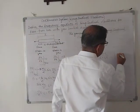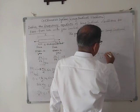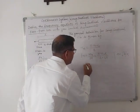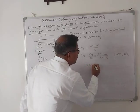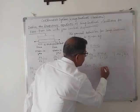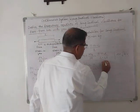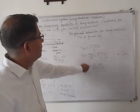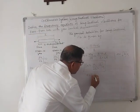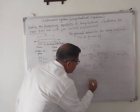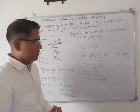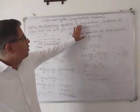Substituting the wave propagation velocity c = √(E/ρ), the natural frequency is: fn = n/(2L) · √(E/ρ). This is the natural frequency for longitudinal vibration, where n = 1, 2, 3, ... and n is the number of nodes.